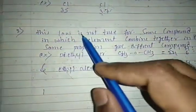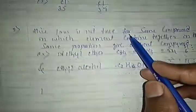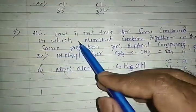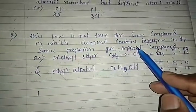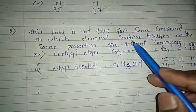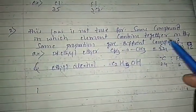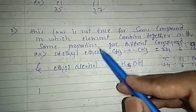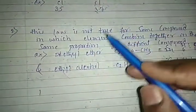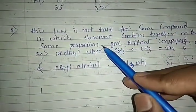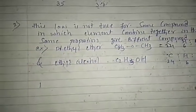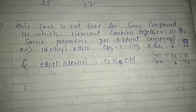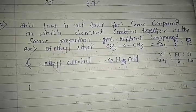The second limitation: this law is not true for some compounds in which elements combine together in the same proportion but give different compounds. The elements combine in the same ratio but produce different compounds.